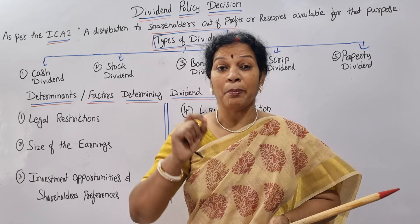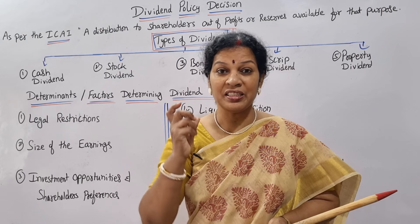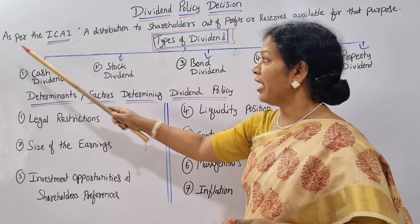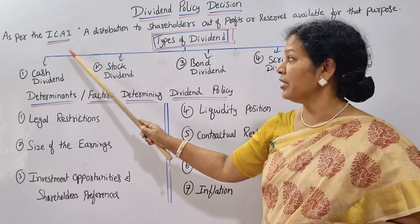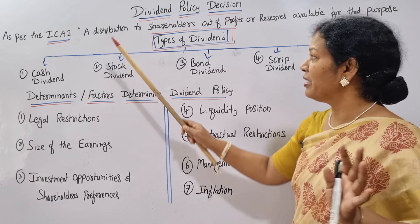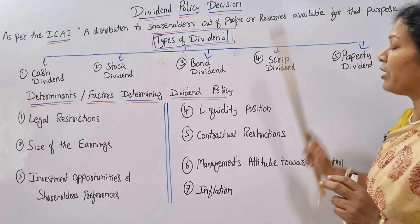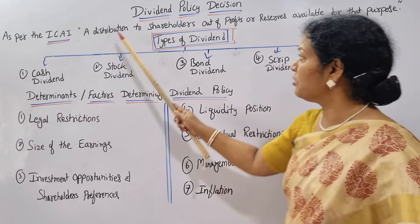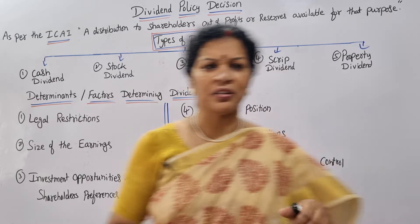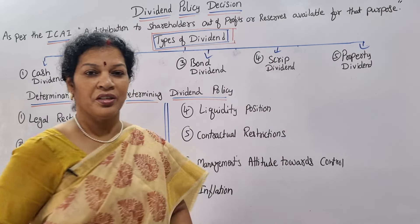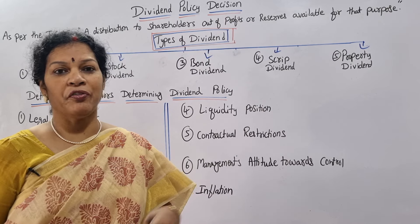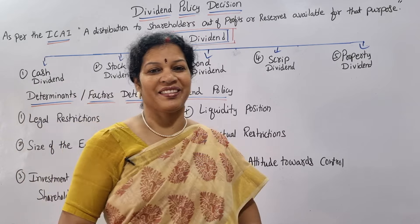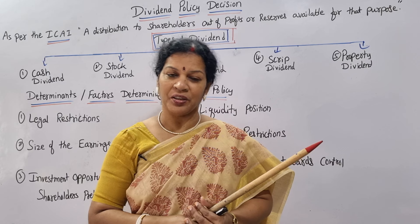So that is why dividend is important — but when to give the dividend, how much dividend is to be given — all these things we are going to learn in depth in this chapter. As per the ICAI (Institute of Chartered Accountants of India), the definition is: a distribution to shareholders out of profits or reserves available for that purpose. So dividend is distributed from profits, or if no profits, from reserves.